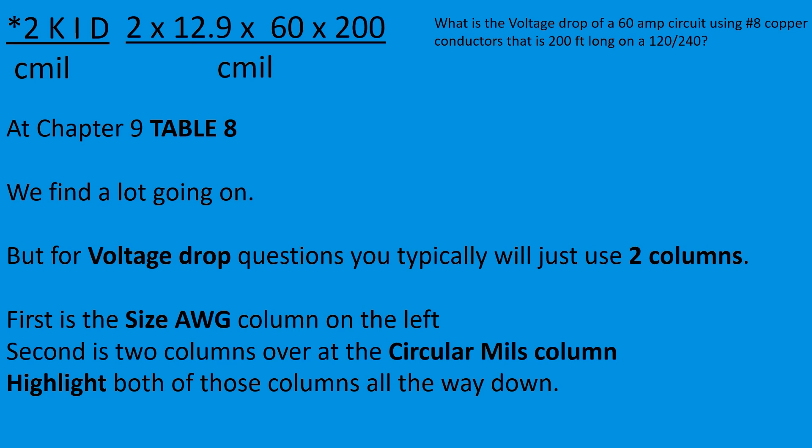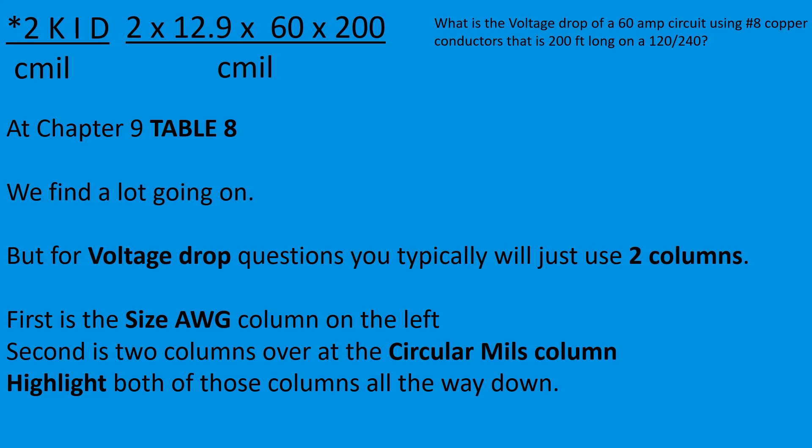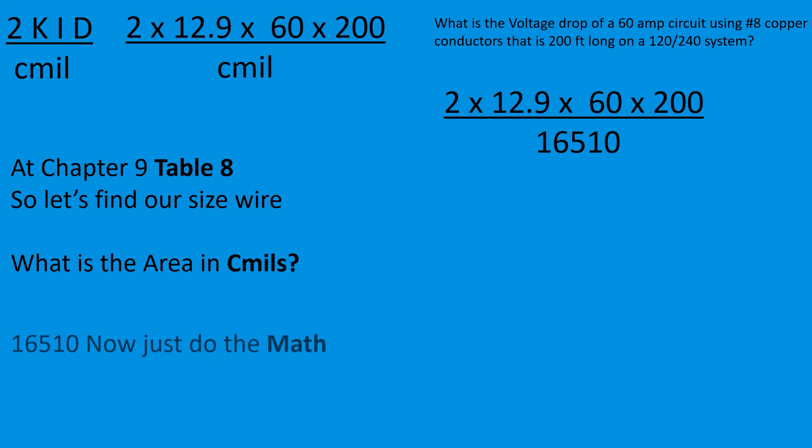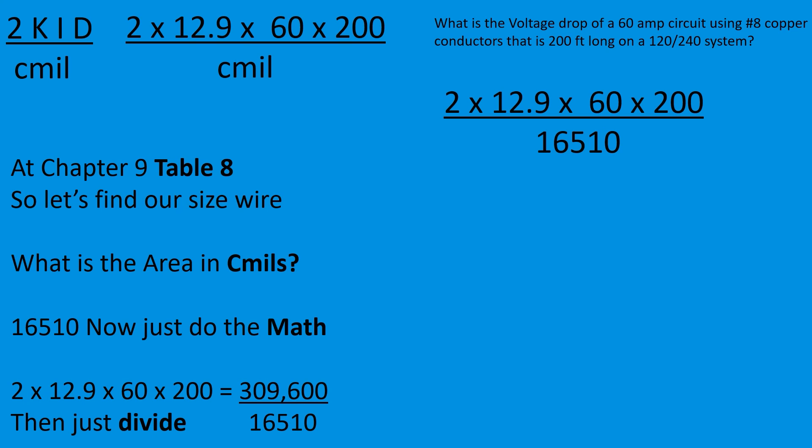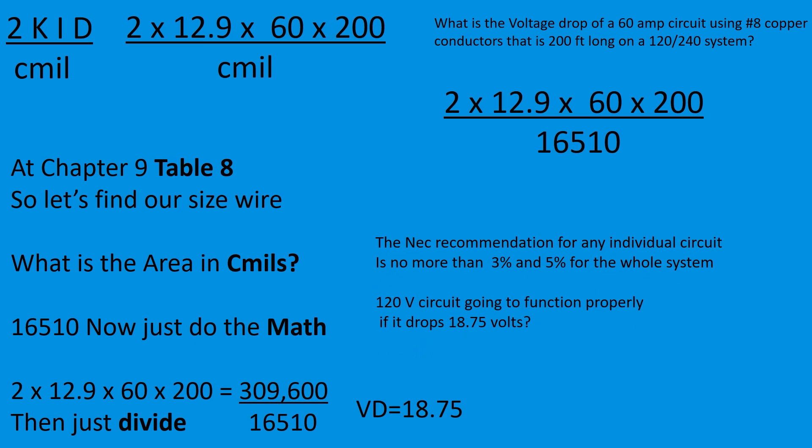Okay, so Chapter 9 Table 8. We find our size wire, we slide over to the area in circular mils. Okay, now we just do the math. So we take 2 multiplied by 12.9, multiplied by 60, multiplied by 200, equals 309,600. Then we just divide. You divide 16,510 into 309,600 and we're going to get a voltage drop of 18.75.